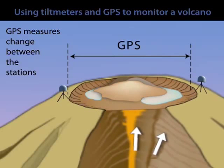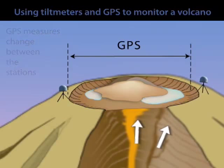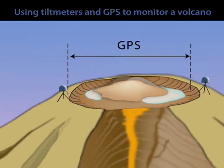As the ground deforms, the volcano changes its shape, those stations move, and that tells us something about what's going on beneath the surface.